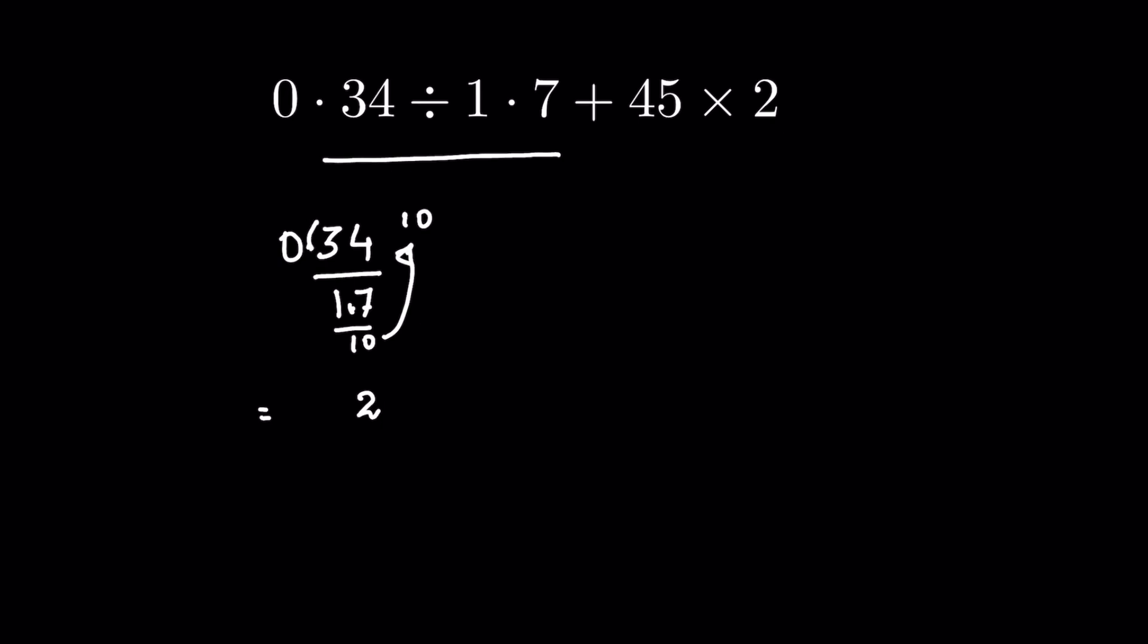Instead of doing this, what we will do is count how many digits are after the decimal. In the numerator there are two digits, and in the denominator there is 1 digit. So 2 minus 1 means you have to write 2 upon 10, or 2 upon 10 is 0.2.